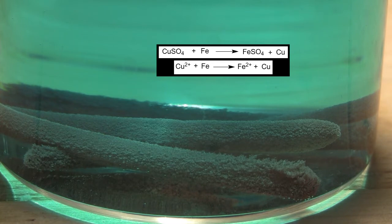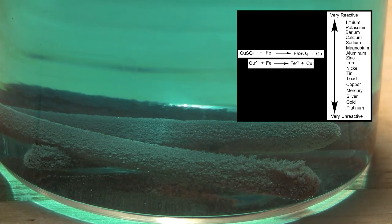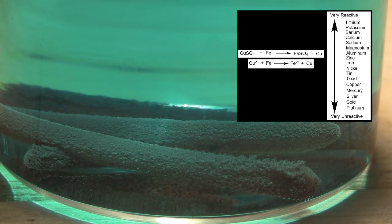But why does this reaction work? The reaction works by using something called the reactivity series, where at one end are extremely reactive metals like potassium, while at the other end are metals like gold that take very harsh conditions to react.